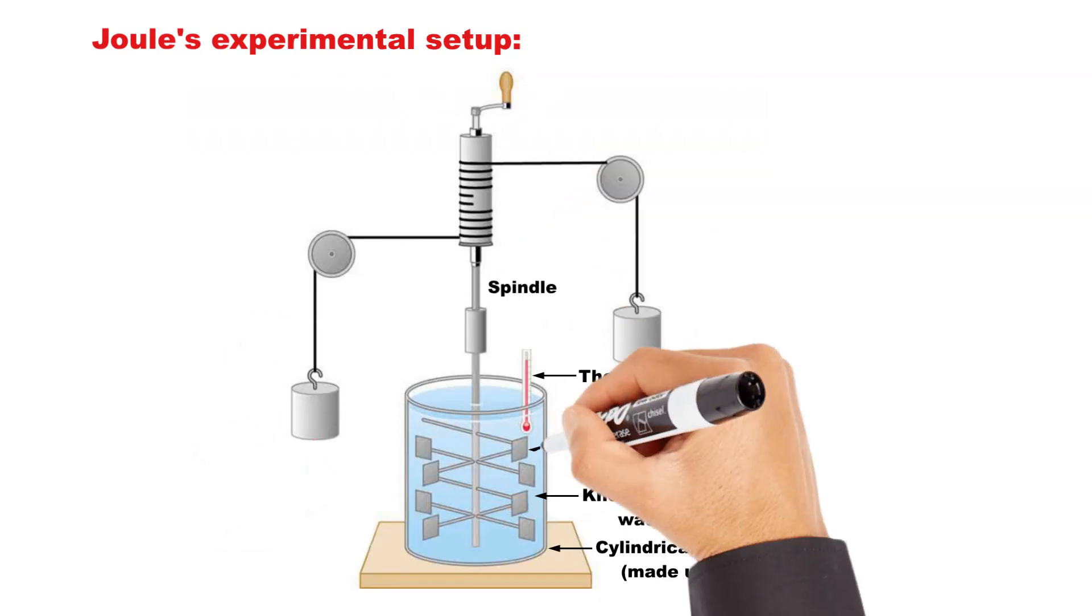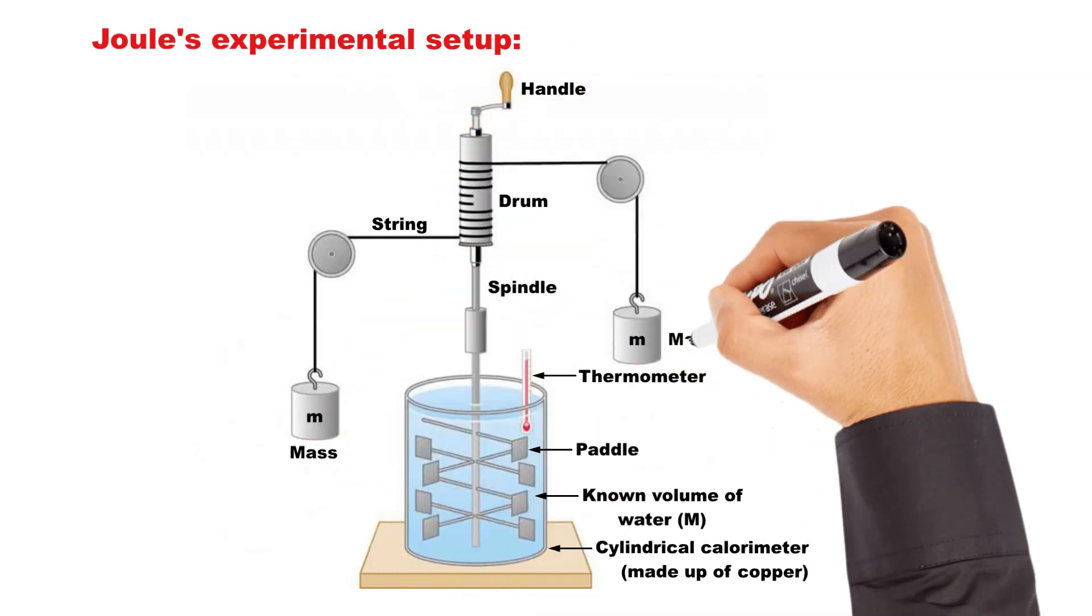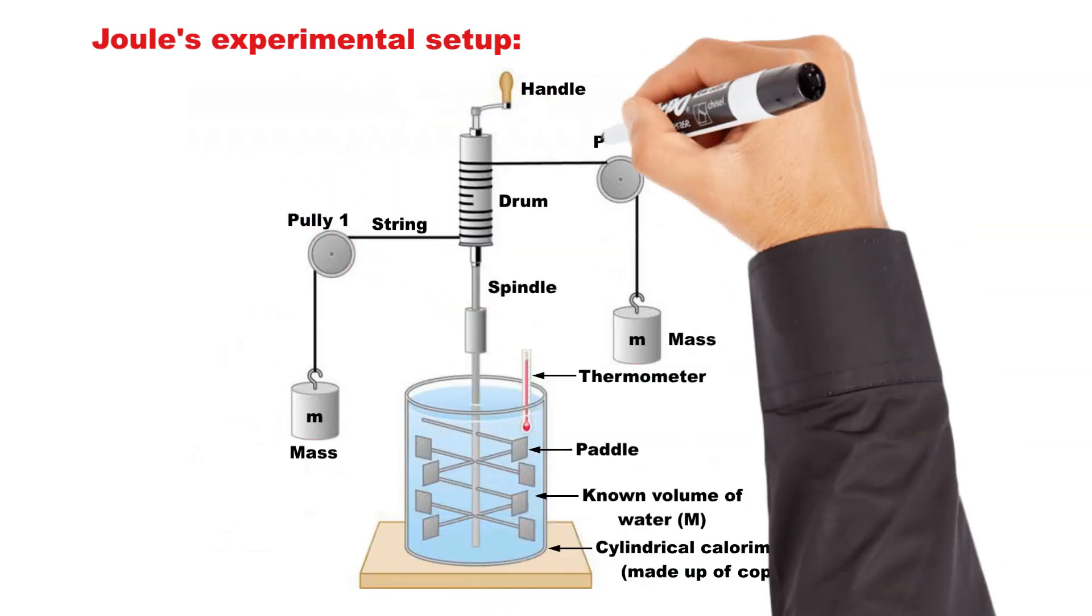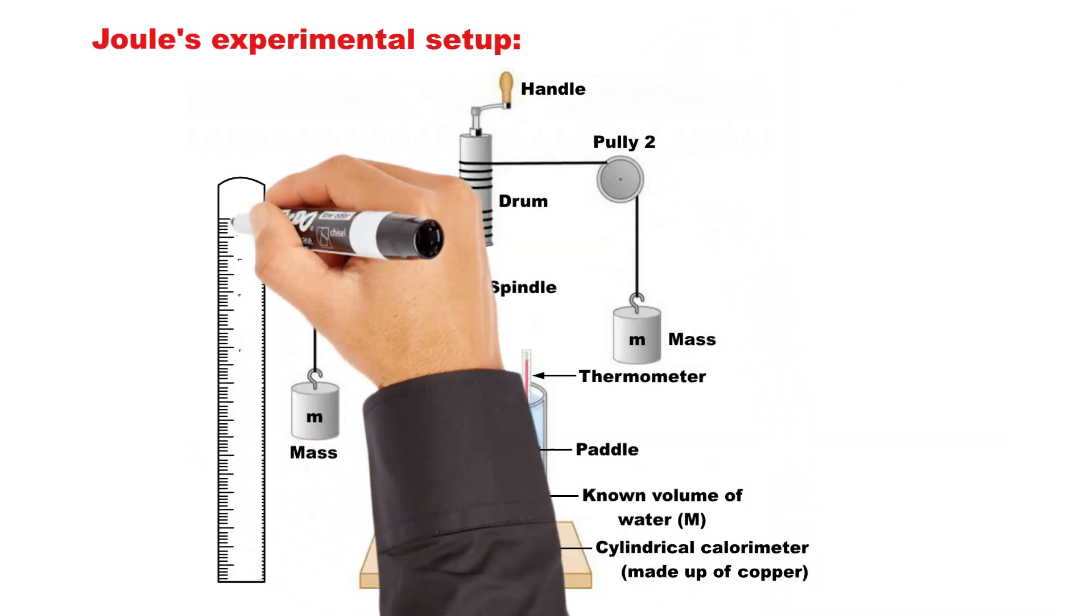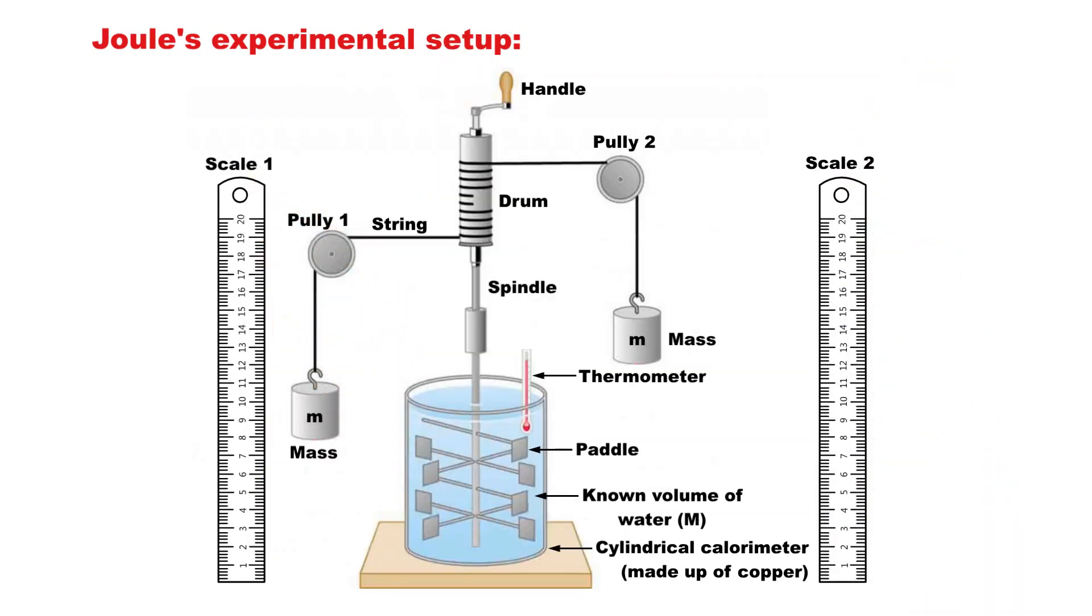The spindle carrying a number of paddles is inserted into the calorimeter. The spindle was attached to a drum and a handle. The string was wound around the drum. Two equal masses were attached on the ends of the string that passed over the pulleys. Two vertical scales were used to measure the heights through which the masses fell.